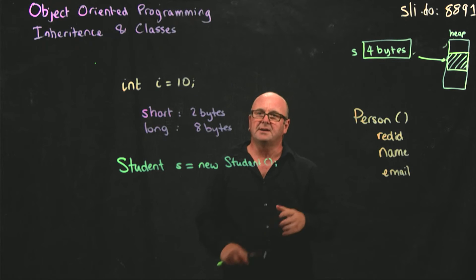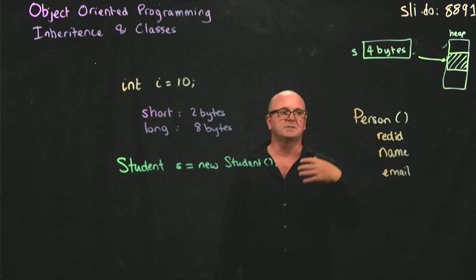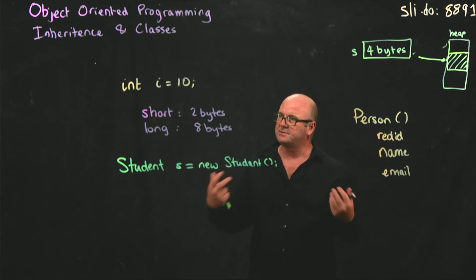So now what I can do is I can have a person class that has the things that are attributes of people, like names, red IDs, email addresses, physical addresses, phone numbers. All of the things that we all share.